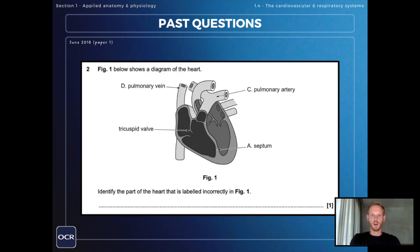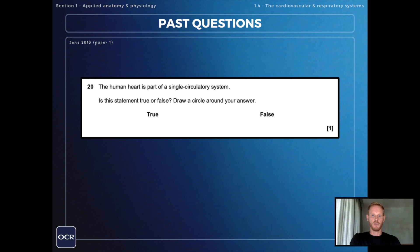Figure one shows a diagram of the heart. Identify the part of the heart that is labeled incorrectly in figure one. And that is of course the pulmonary vein. The correct label here would be the vena cava.